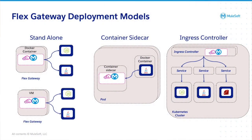For example, if customers are running distributed microservices written in different languages in a Kubernetes cluster, they will be able to deploy the Flex Gateway as an ingress controller inside the Kubernetes cluster and apply policies for authentication, authorization, etc. They would also be able to deploy the Flex Gateway as a sidecar container or run it in its own pod and horizontally scale it within the Kubernetes cluster.